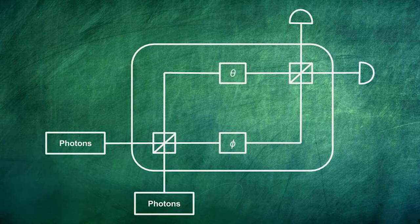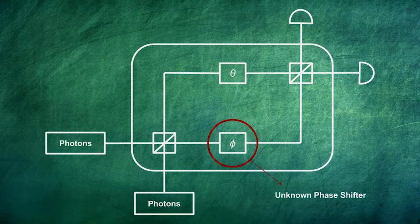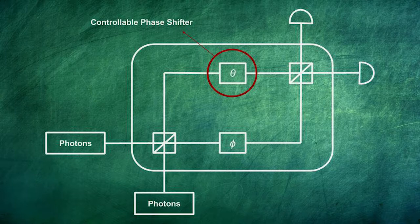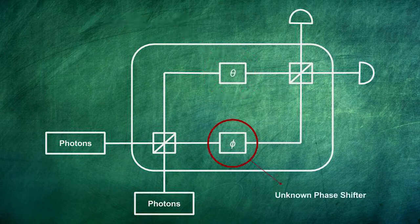As an example, let's have a look at the Mach-Zehnder interferometer. Here we want to determine the precise value of a phase shifter without directly looking at it. The interferometer is made of two phase shifters: a phase shifter phi, that is unknown to us and whose value we want to determine, and a phase shifter theta, which we can control and adjust at will. The idea is to keep changing the values of the controllable shifter until it can replicate, to a desired degree of precision, the behavior of the unknown shifter, and hence give a good estimation of its value.